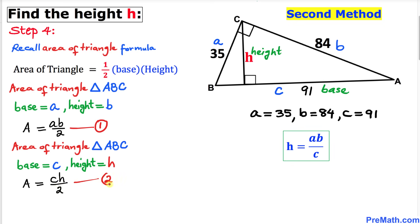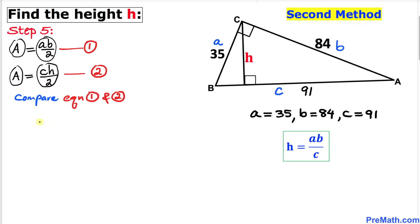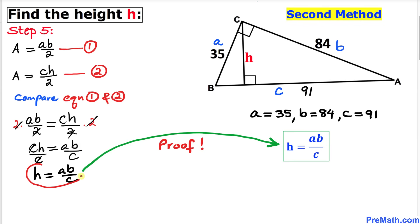Comparing equations one and two, since the left-hand sides are equal, we can equate the right-hand sides: a times b divided by 2 equals c times h divided by 2. Multiplying both sides by 2 removes the fractions, giving c times h equals a times b. Dividing both sides by c, we get h equals a times b divided by c. That is our proof for this formula.